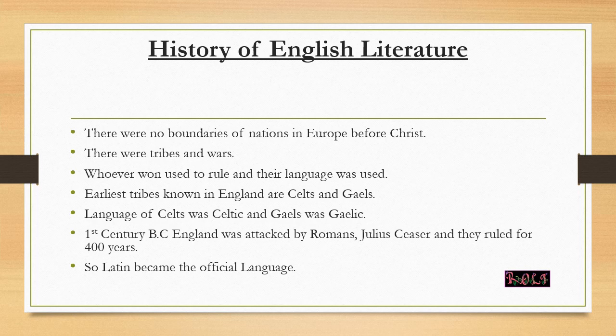Two tribes that ruled were the Celts and the Gaels — Celts spoke Celtic and Gaels spoke Gaelic. In many parts near the United Kingdom, there are still some places where Celtic is spoken, like in Ireland. By the first century BC, England was attacked by Romans under the leadership of Julius Caesar.